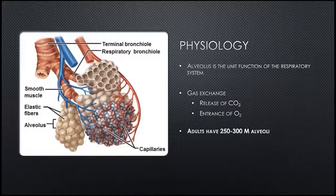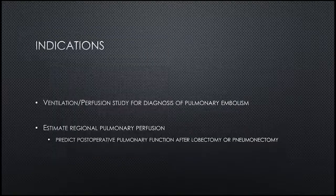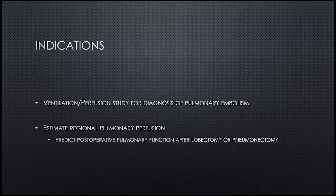Physiology: the alveolus is the functional unit of the respiratory system. Gas exchange involves releasing carbon dioxide and taking in oxygen. Adults have 250 to 300 million alveoli — keep that number in mind when we talk about MAA and how it's distributed. The lung also has the function of a filter, which we don't talk about as much, but it's important. The VQ study for diagnosis of pulmonary embolism is our number one indication. We can also estimate regional perfusion and predict postoperative pulmonary function after lobectomy or pneumonectomy.